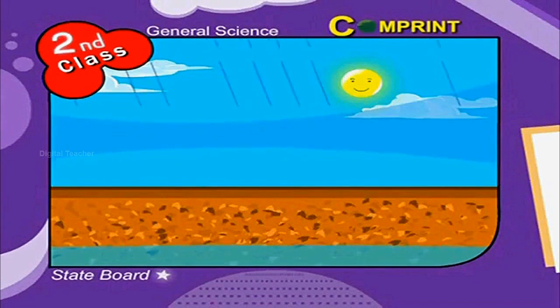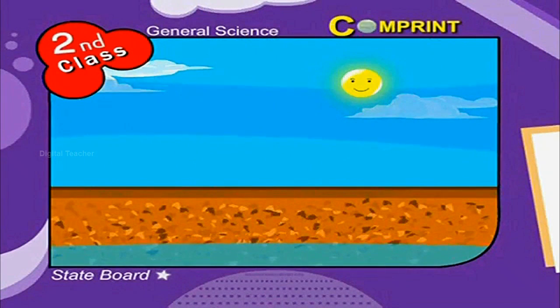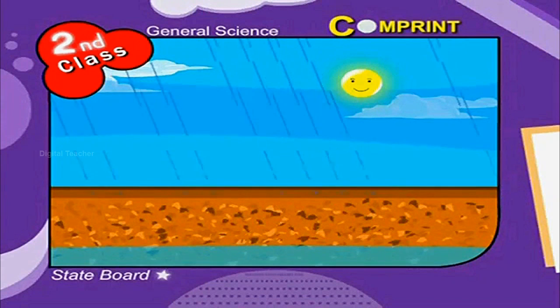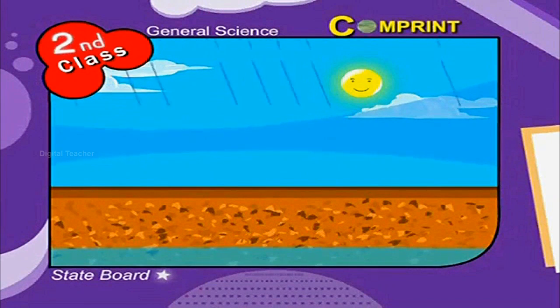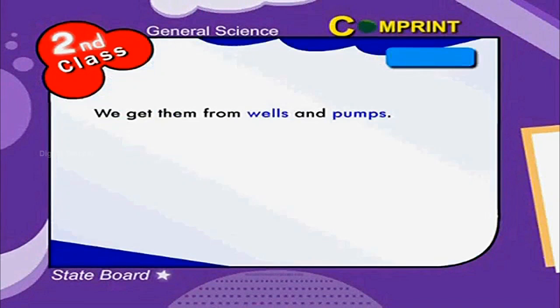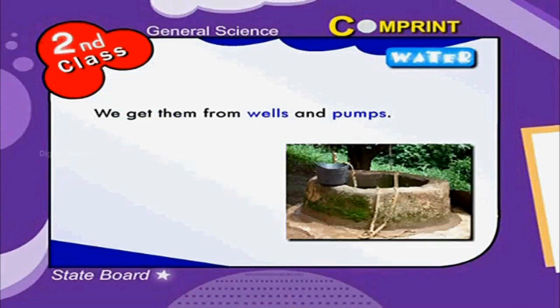Some rain water seeps into the ground. This is called ground water. We get water from wells and pumps.